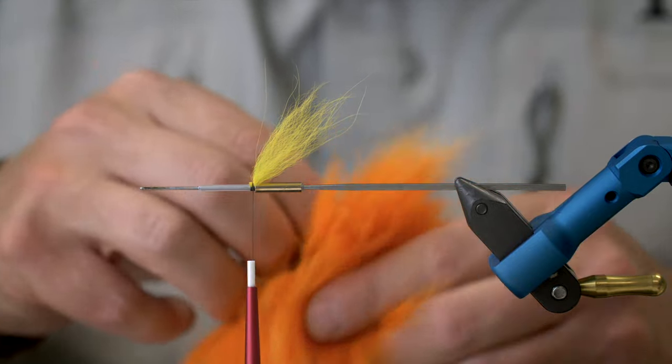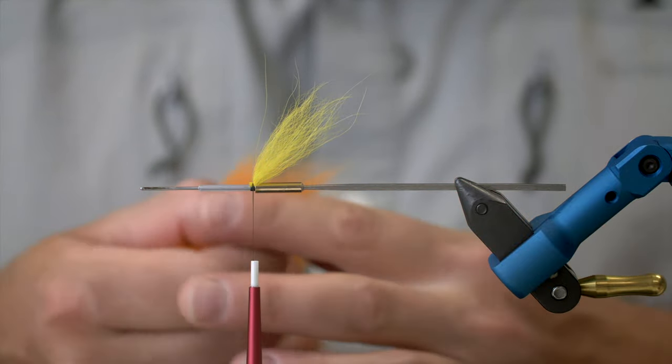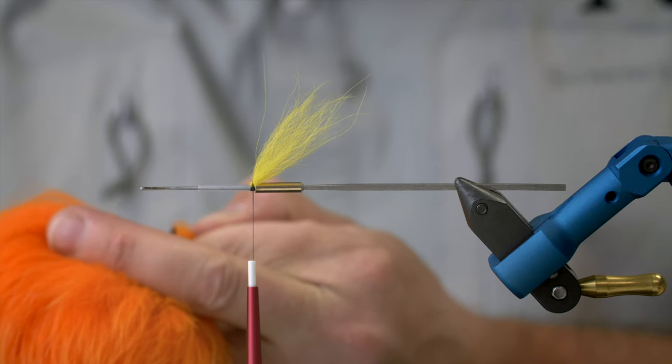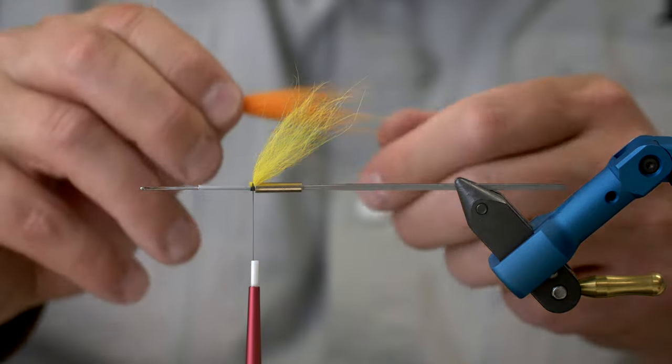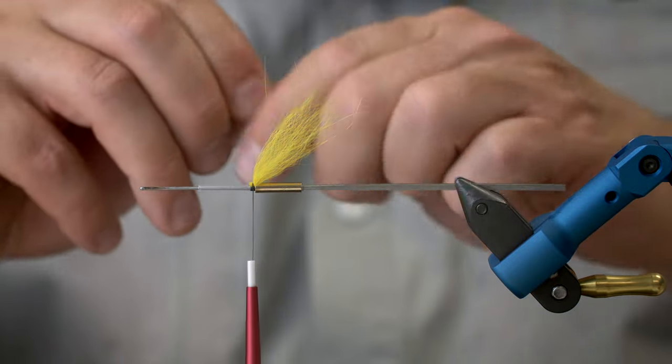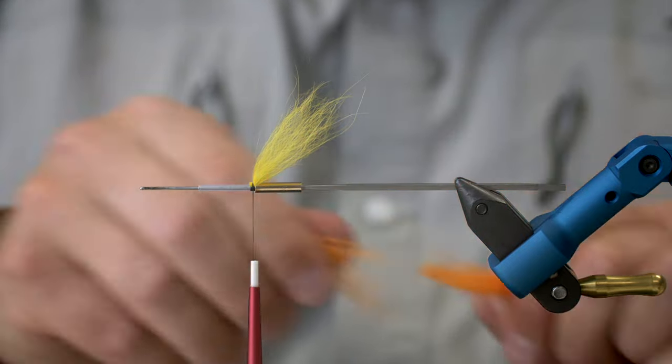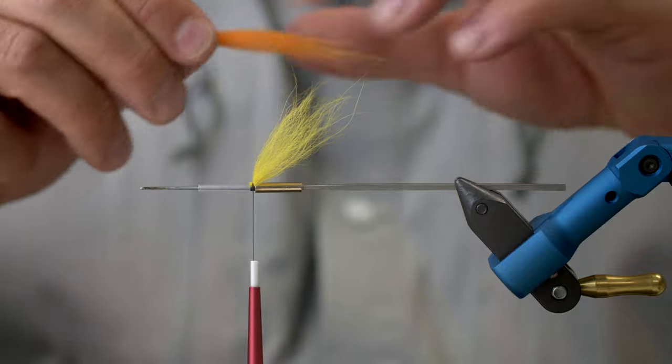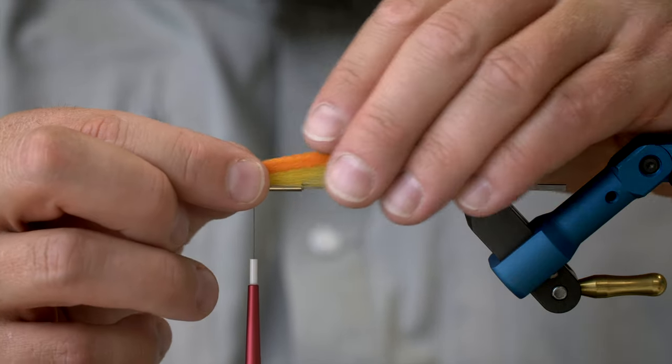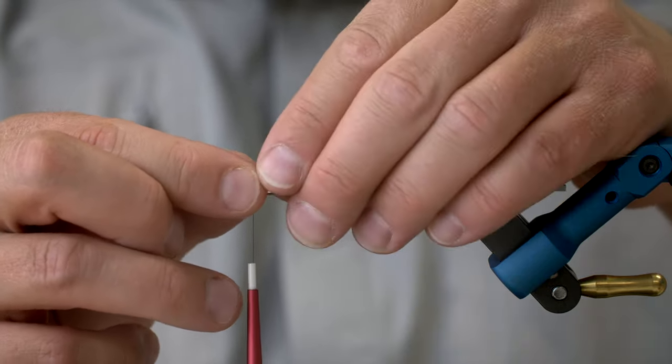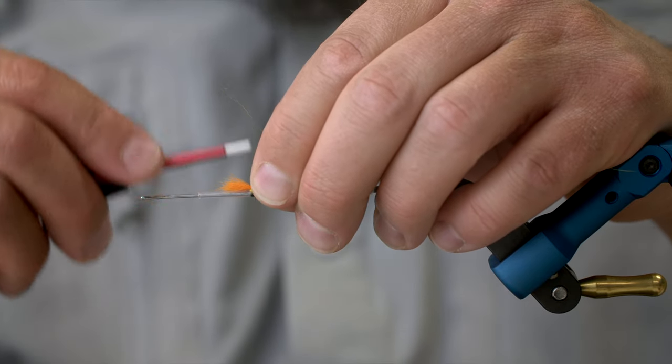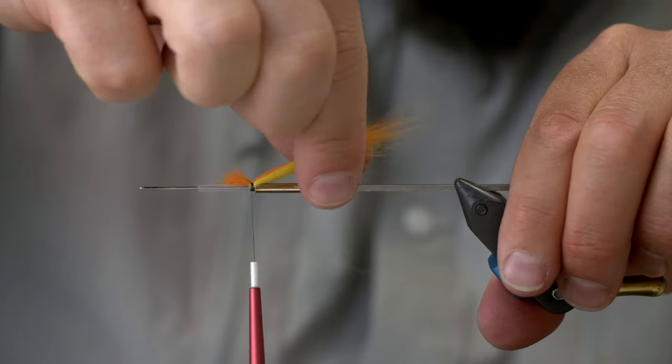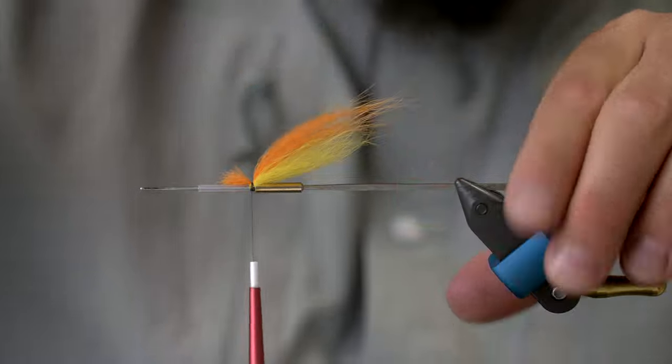Then we're going to take a small amount of the orange one. About the same size of the bundle as with the yellow. But this has to be slightly longer. So I'm going to leave a bit more of the longer, coarser hairs in there. And I'm going to remove all the woolly part again as well, as I did before. I'm going to force the yellow wing down. And as you can see now, this should be slightly longer.